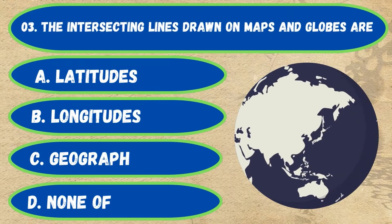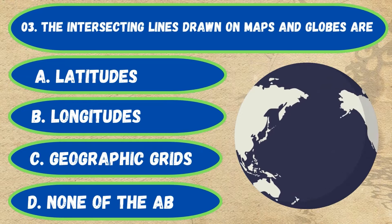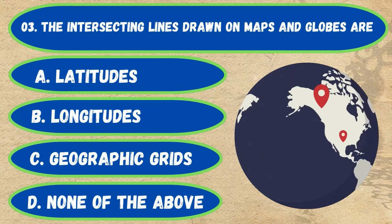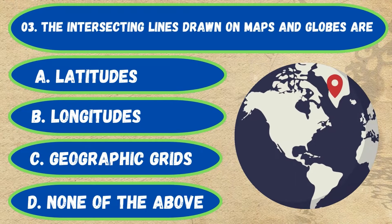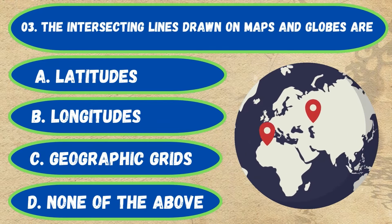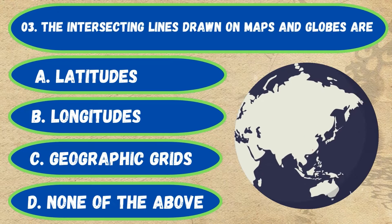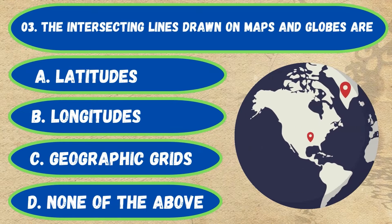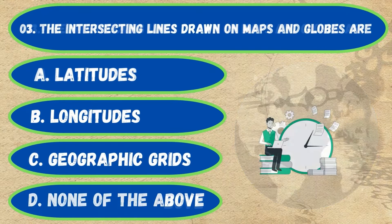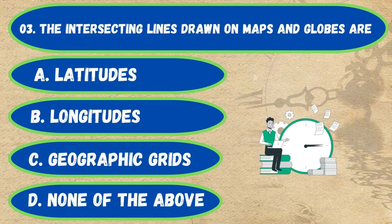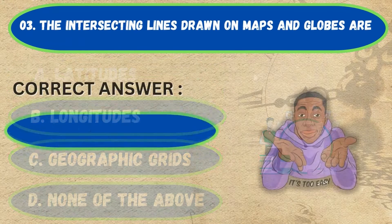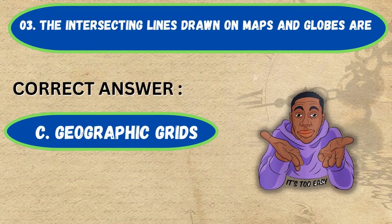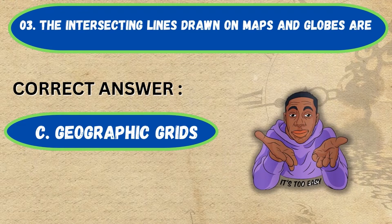Question number 3. The intersecting lines drawn on maps and globes are: option A, latitudes; B, longitudes; C, geographic grids; D, none of the above. The correct answer is option C, geographic grids.